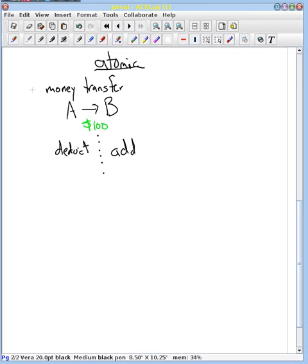It doesn't matter which one we do first and which one we do second, if we do both of them. If I subtract $100 and then add $100, money hasn't disappeared from the system. If I add $100 and then subtract $100, money hasn't been created in the system.